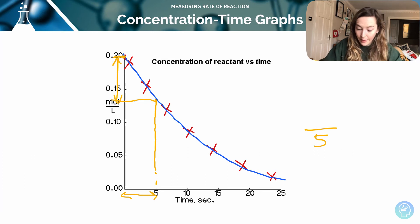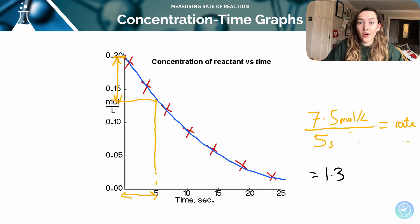This number here, that's my rise over run. If I predict from this number, about 7.5, 7.5 over 5 will give me my rate in the first five seconds of that reaction. So the rate in the first five seconds we can see here is about 1.3 moles per liter per second.